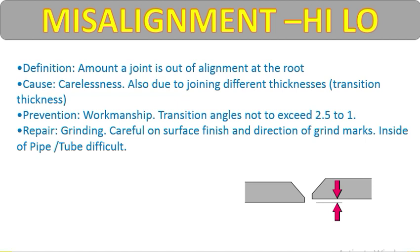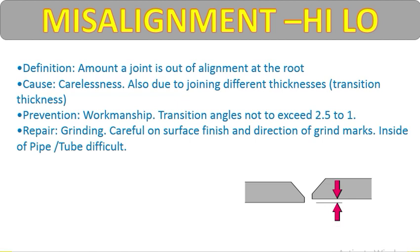Misalignment can also occur due to joining different thicknesses. If the thickness is different on each side and you did not check the joint thickness properly, high-low results. Prevention: workmanship should be better — you should check before fitting that all material is the same thickness and at the proper level. The transition angle should not exceed 2.5 mm to 1 mm.